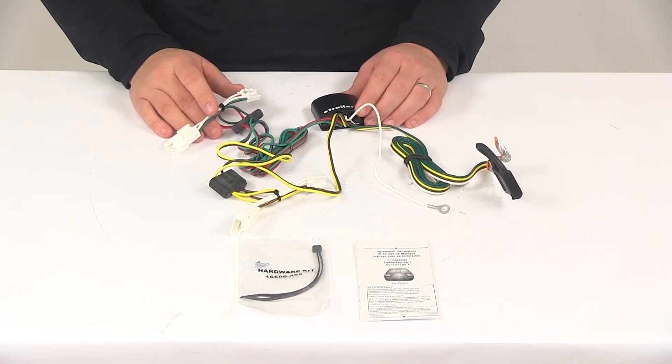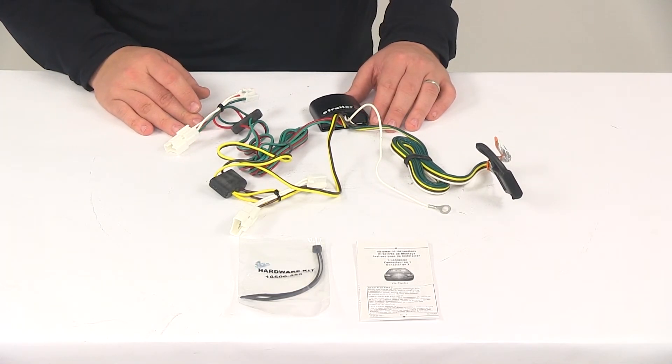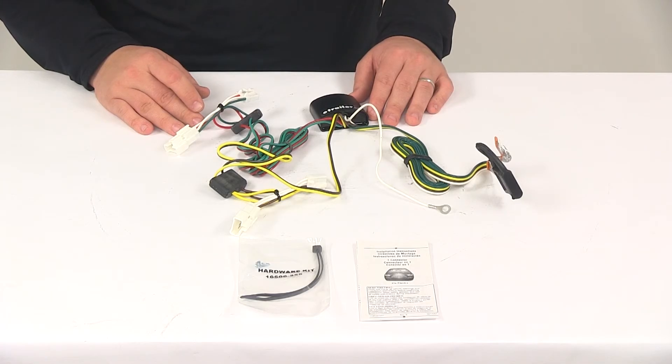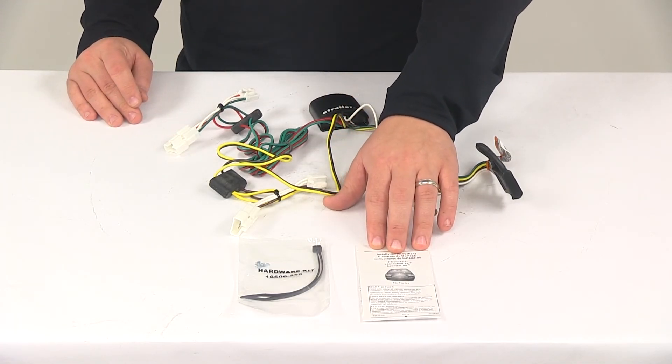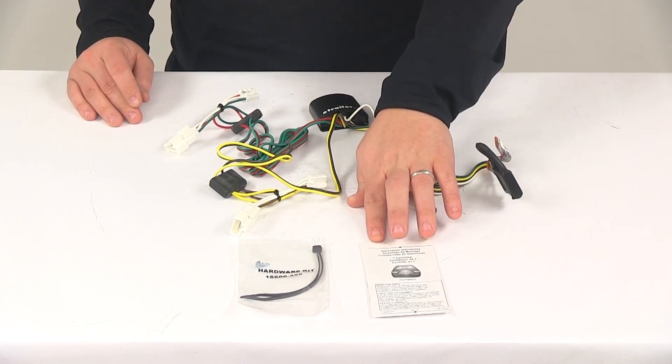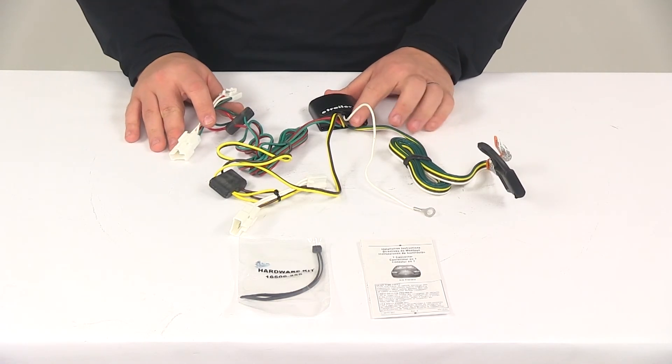When it comes to maximum amperage, we're looking at 2.1 amps for the stop and turn lights and 5 amps for the tail lights. The kit also comes with detailed installation instructions to help walk you through the entire process step by step.